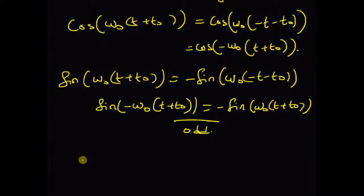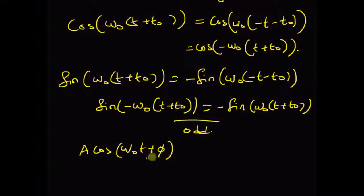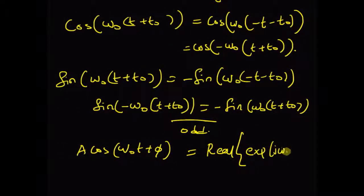Finally, sinusoids are related to complex exponential functions as follows: A times cos(omega-naught t + phi) is equal to the real part of the complex exponential A times e^{j(omega-naught t + phi)}. So the real part of this complex exponential is A times cos(omega-naught t + phi), where A is the amplitude.